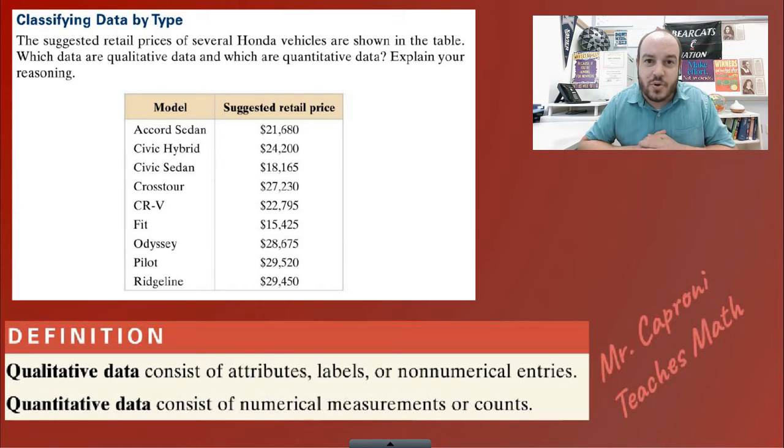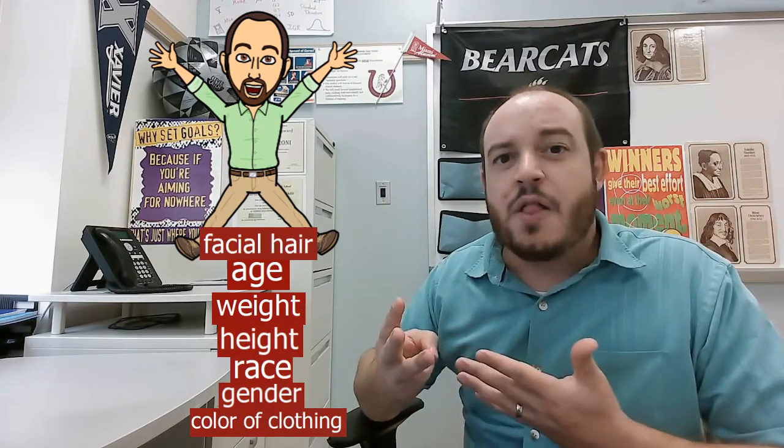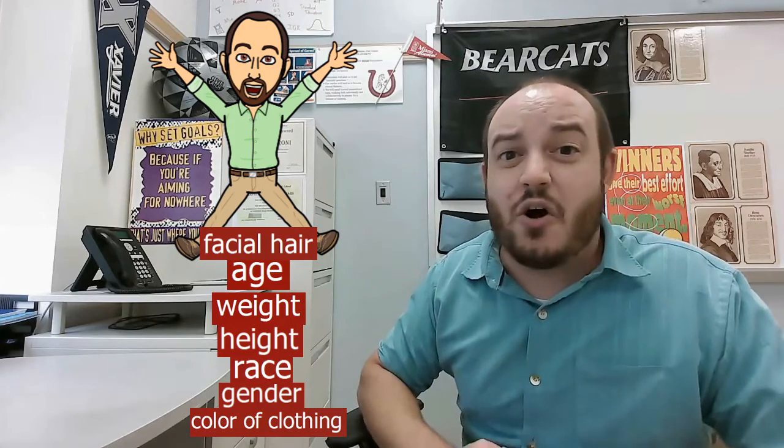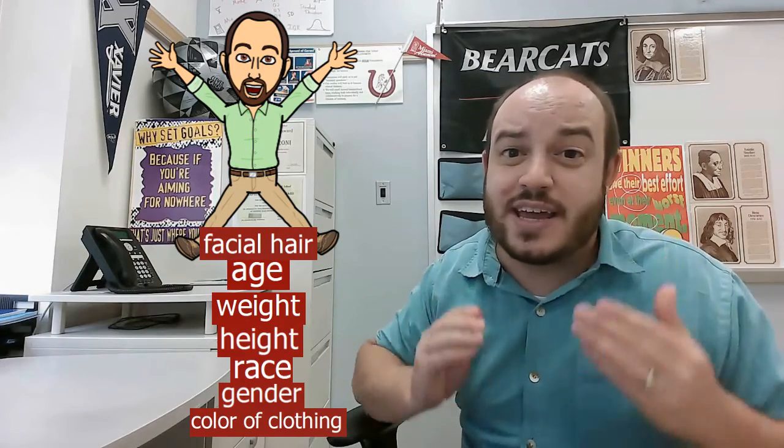That's going to be our qualitative variable. Let's look at some other examples of separating between quantitative versus qualitative. You probably remember this guy. Let's talk about some individual traits about him. First off, what age is he? Or maybe what weight, what height, what race is he, what gender is he? We may even look at other things like what color shirt is he wearing or pants, or what type of facial hair does he have.